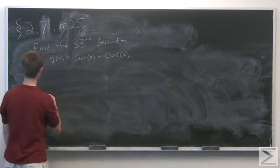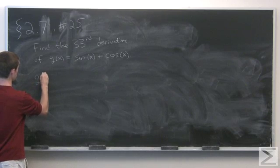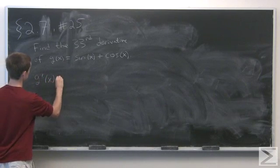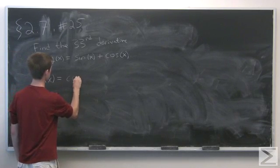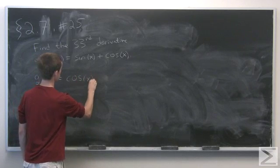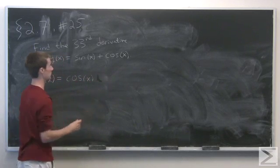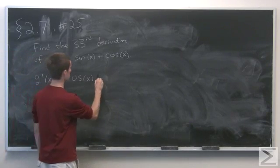Let's look at what happens at g'(x). The derivative of sine is cosine of x, and the derivative of cosine is minus sine of x. So g'(x) = cos(x) - sin(x).